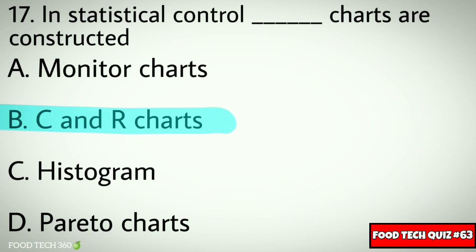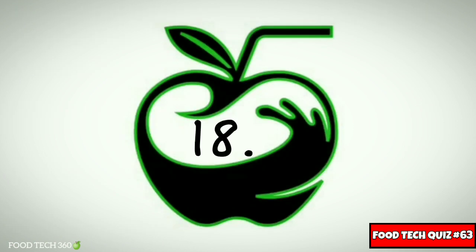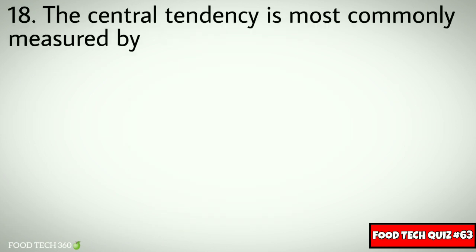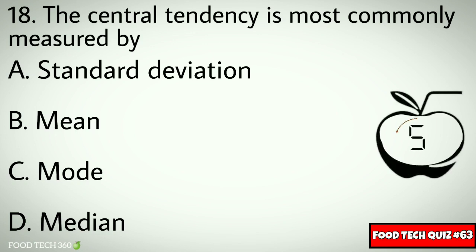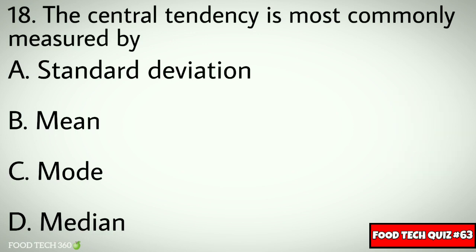Question No. 18. The central tendency is most commonly measured by: Options: A. Standard Deviation, B. Mean, C. Mode, D. Median. Correct answer: B. Mean.